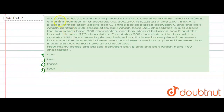Hello students, our next question is: 6 boxes A, B, C, D, E and F are placed in a stack, one above another. Each box contains a different number of chocolates, which are 300, 240, 169, 225, 330 and 260.